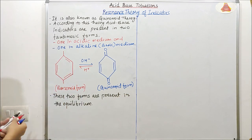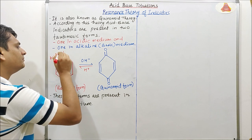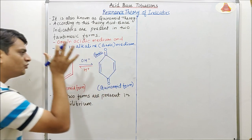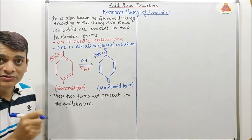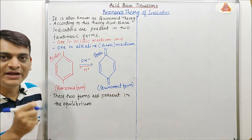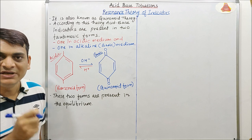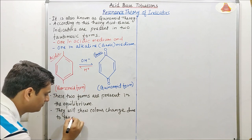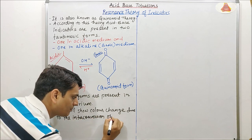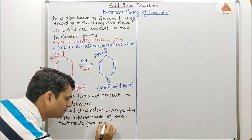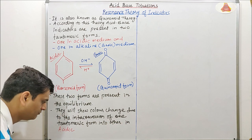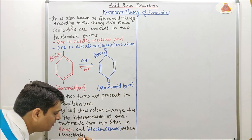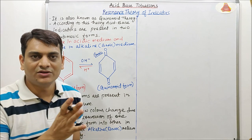This structure will be present in acidic medium and this structure will be present in basic or alkaline medium. Both these structures will show color change due to the interconversion of one tautomeric form into the other in acidic and alkaline medium respectively. This is the details about resonance theory or quininoid theory.